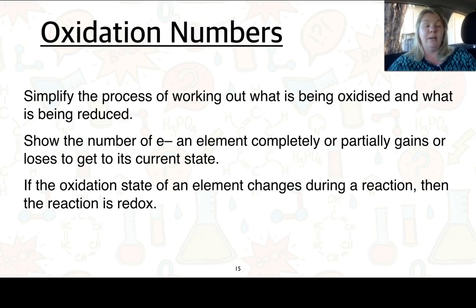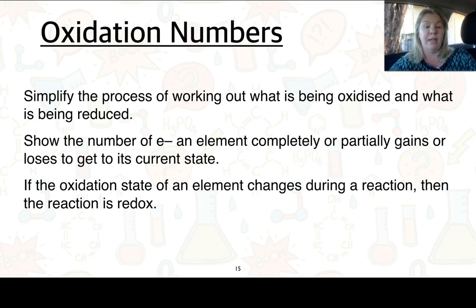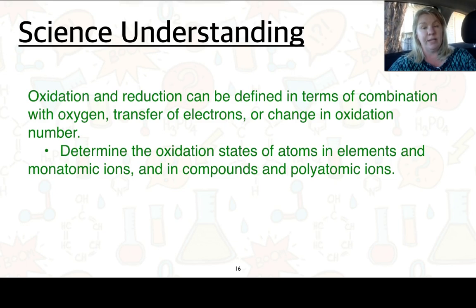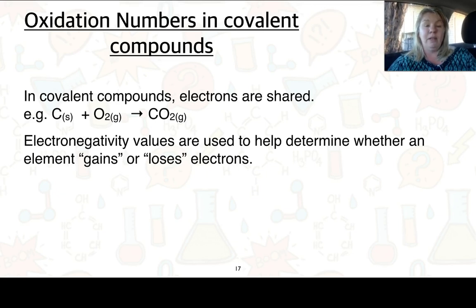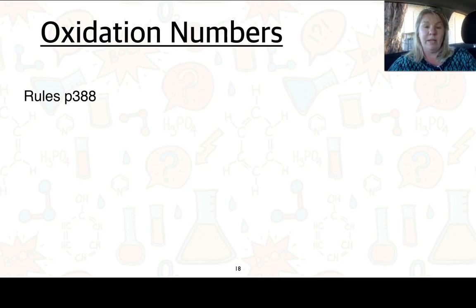Oxidation numbers is another way we can work out what is being oxidised and what is being reduced — it shows the number of electrons an element completely or partially gains or loses to get to its current state. If the oxidation state of an element changes during a reaction, then the reaction can be classed as redox. We're going to determine the oxidation states of elements and atoms in elements, monatomic ions, and in compounds and polyatomic ions. In covalent compounds electrons are shared — for example, carbon plus O2 goes to CO2. Electronegativity values are used to help determine whether an element gains or loses an electron. There are rules on page 388 of your textbook that I'd like you to copy down.